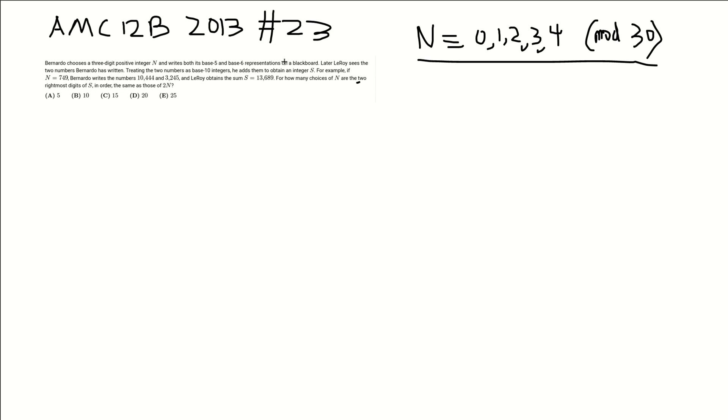But now we need to make sure that the other half is satisfied. So now we need the tens digit of s to be the same as the tens digit of 2n. And well, the way we're going to do this is through an exhaustive search. So right now we only need to care about the tens digit because we know that as long as n is congruent to these numbers mod 30, then the units digit will be satisfied.